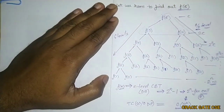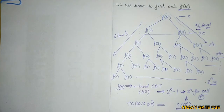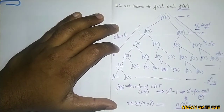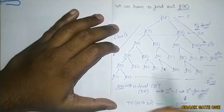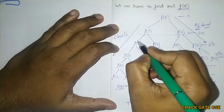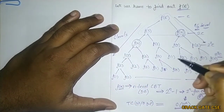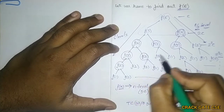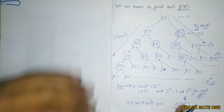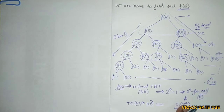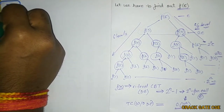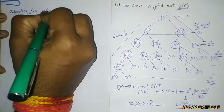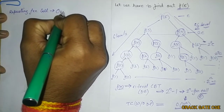Looking at the recursive tree, one important thing stands out: many function calls are repeating. F(4) is repeated, F(3) is repeated at multiple places, and F(2) is repeated at multiple places as well. These repeating function calls are known as overlapping subproblems.